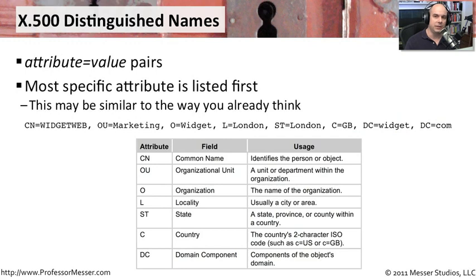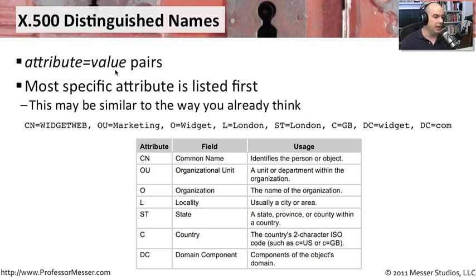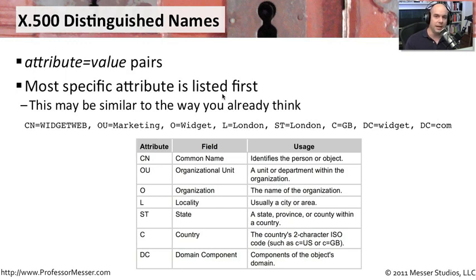When you look at the X.500 information stored in these directories, you'll notice it's accessed with a certain syntax. This syntax uses an attribute=value pair format. Groups of pairs are put together to find a particular user or reference a particular resource, with the most specific attribute listed first — very similar to how you'd navigate to a website like www.professormesser.com, where the web server is most specific and .com is extremely broad.